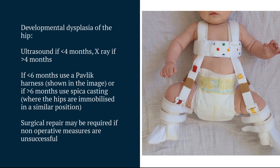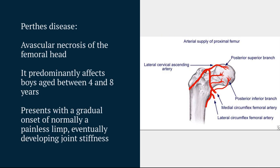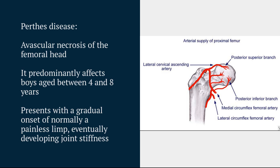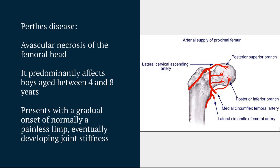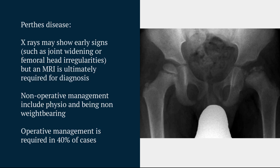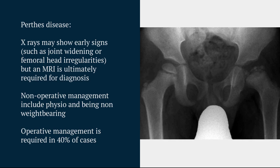Moving on to Perthes disease, or sometimes known as Legg-Calvé-Perthes disease. The underlying pathology here is avascular necrosis of the femoral head. We're not entirely sure why that happens, but you certainly lose blood supply. It's a condition predominantly seen in boys, sort of late preschool to early primary school age. Presentation is more of a gradual onset, often a painless limp, although you can develop some joint stiffness and therefore some joint pain later. X-rays can be useful and can raise our suspicion of the diagnosis, but an MRI is gold standard. Once diagnosed, it's important to avoid activities that are going to make this worse. Lots of children are non-weight-bearing and have quite extensive physiotherapy. If those are unsuccessful, then we're going to require operative management.